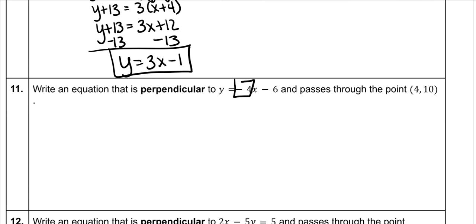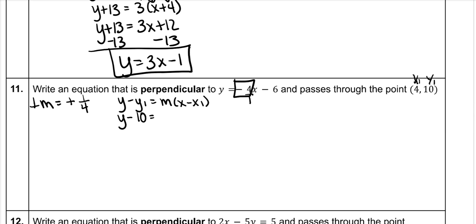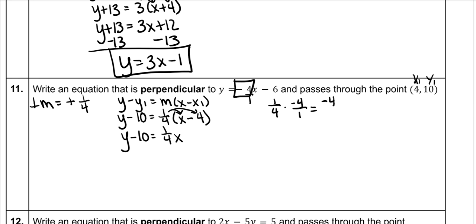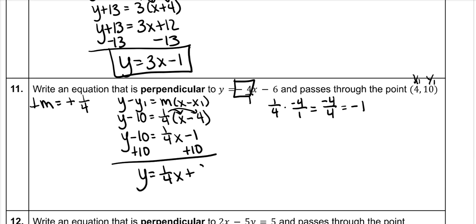For perpendicular: the given slope is negative 4, so the perpendicular slope is the positive reciprocal. Negative 4 is the same as 4 over 1, so flipped it becomes 1 fourth. The given point is x1 and y1. Point-slope form: y minus 10 equals 1 fourth times (x minus 4). Distribute 1 fourth: 1 fourth x, and 1 fourth times negative 4 is negative 1. Add 10 to both sides: y equals 1 fourth x plus 9.